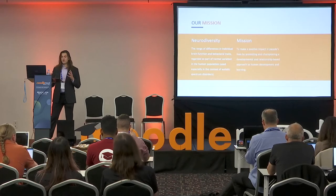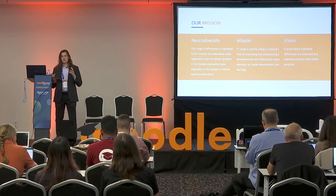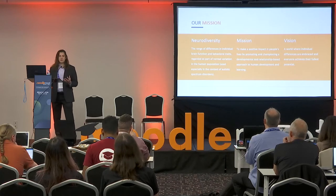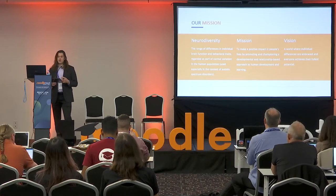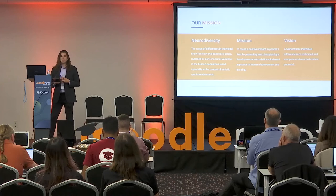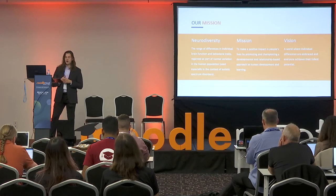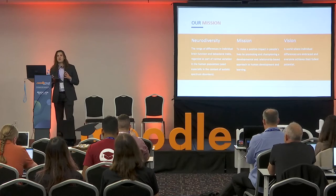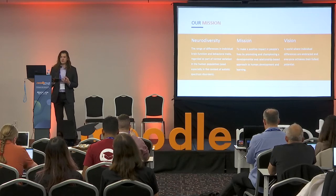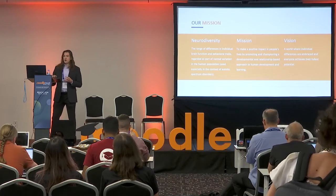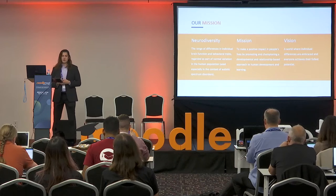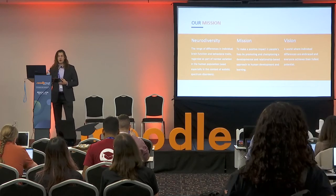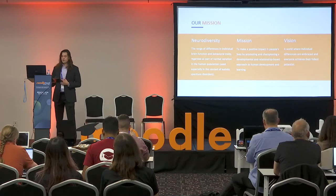I want to talk a little bit about our mission, and it's impossible to talk about our mission without first touching on what neurodiversity is. It's a newer concept, defined by Oxford Languages as the range of differences in individual brain function and behavior traits regarded as normal variation in the human population, especially in the context of autism spectrum disorder. What ICDL wants to see is a world where we embrace neurodiversity and individual differences to help promote those individuals to live happy, healthy lives and achieve their fullest potential. There's too much prejudice in the world against those who are neurodiverse, so we believe we can help people by promoting and championing a developmental and relationship-based approach.